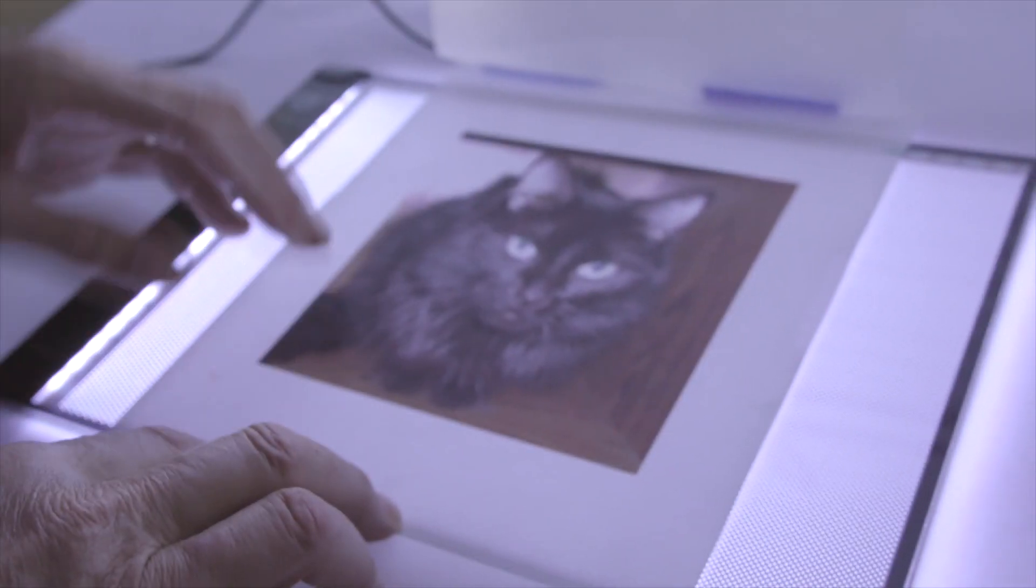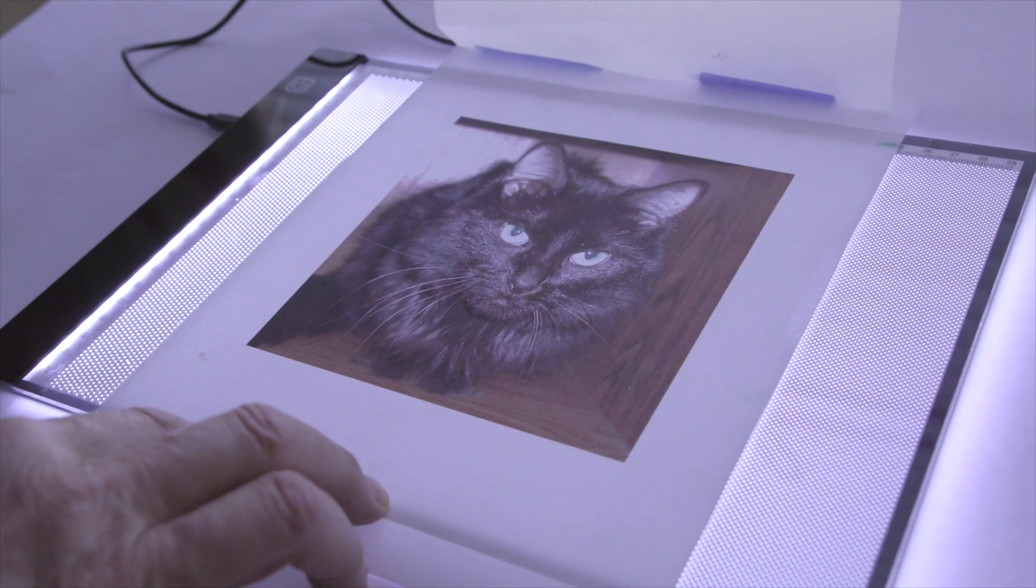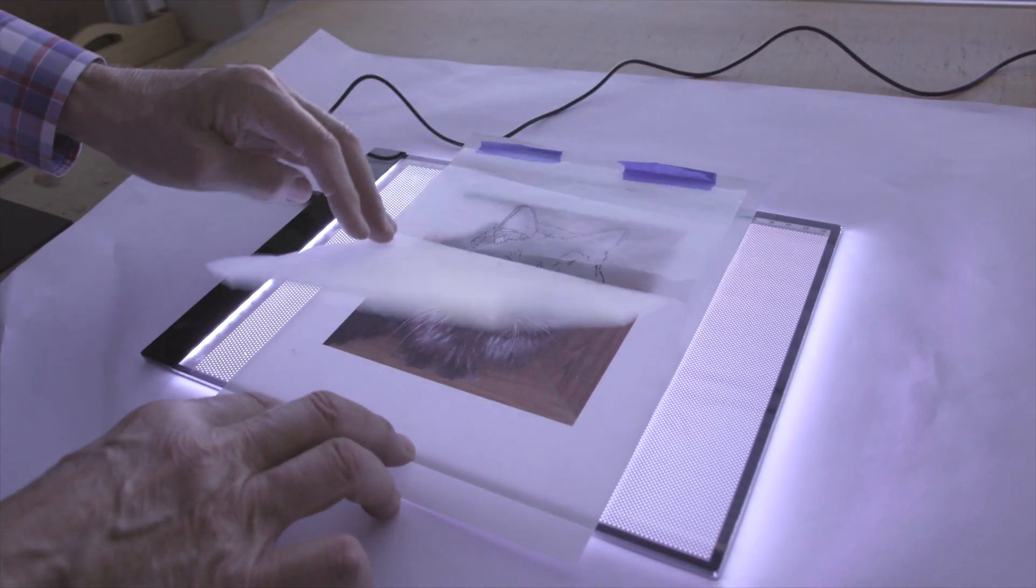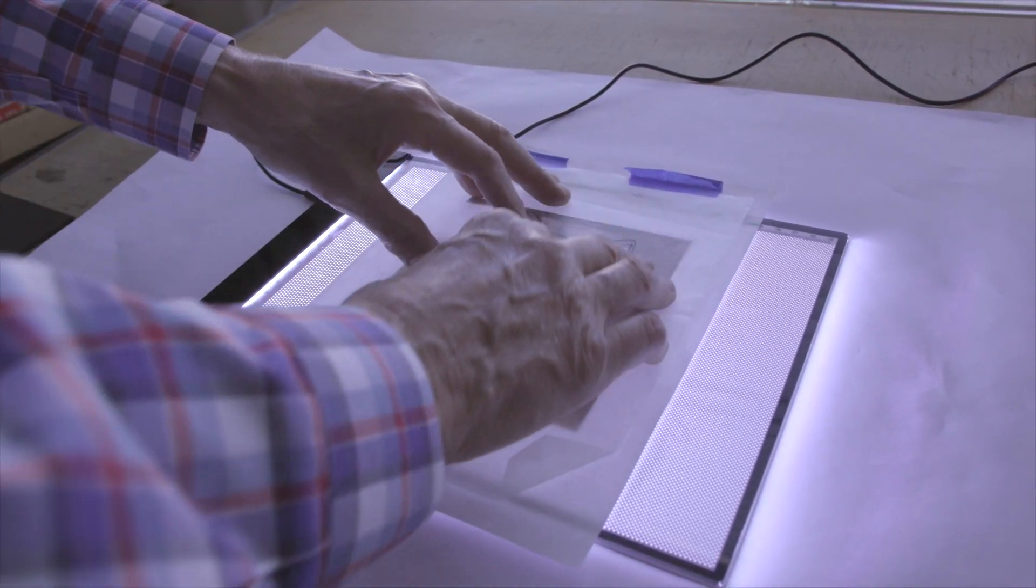I'll put the illustration or the photo down on the light box. Tissue paper goes over a tracing paper. Now you can see it clearly.